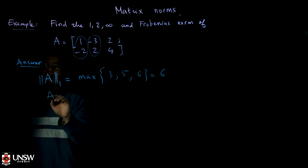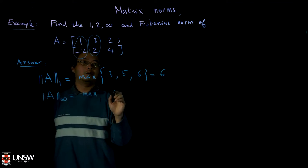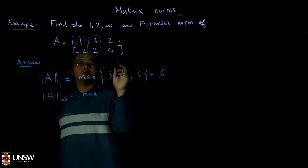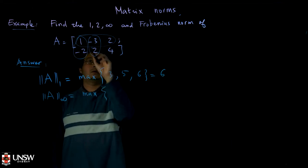And for the infinity norm of the matrix A, now we just take the max of the row sum. So the row sum is, now you have to take this row in absolute value. You take the sum, so 1,